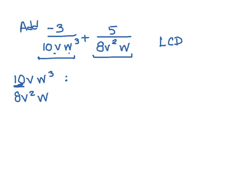So I'm going to break each of these down into their prime factors. Let's work with the numbers first. So 10 prime factorization is 2 times 5. 2 times 5 gives me 10, and I have a v and a w cubed, so I have 3 w's: w times w times w.